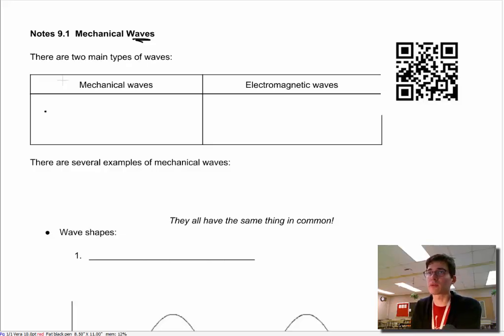Mechanical waves, if you remember from your reading or from anything you've done in the past, these guys, they need matter. The M's go together. Mechanical waves need matter. So they do not travel unless there is matter present, matter is just the stuff of the universe.